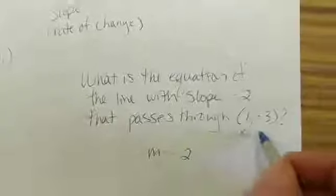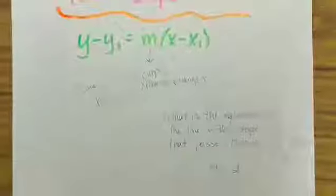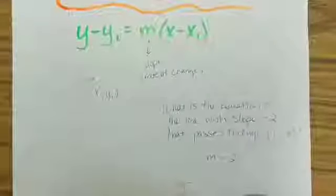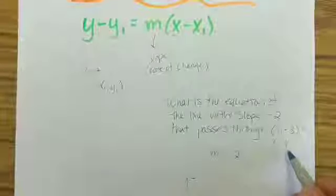Now this point is going to be our x1, y1. So when we write the equation, we're going to use our point slope form. We're going to keep the y the way it is, and the y1 is negative 3. So we're going to subtract that.